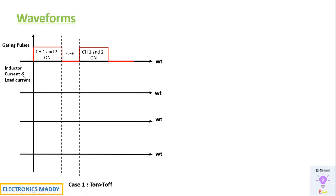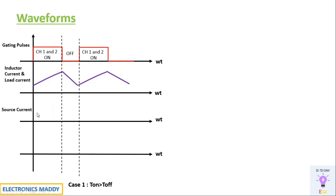The inductor current and load current are the same because the same current flows through the load, and the load current is essentially the inductor current. The current starts increasing when CH1 and CH2 are turned on because the inductor starts charging. When CH1 and CH2 are turned off, the energy stored in the inductor is discharged through D1 and D2, and current starts decreasing. This pattern repeats each cycle, producing this waveform shape.